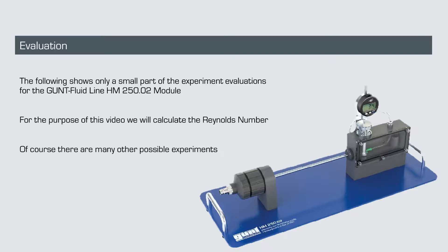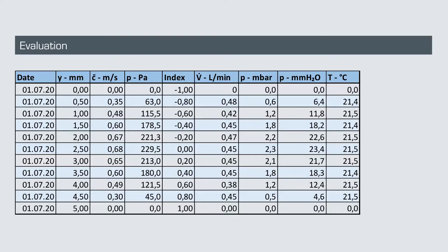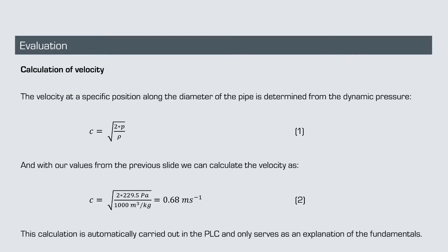For the purpose of this video we will calculate the Reynolds number for the first part of our experiment. After importing the experiment data — saved directly from the HM250 base unit onto a memory stick — into your preferred spreadsheet program, it may look like this. For this demonstration let's focus on one particular measurement: the center position of our pipe. We calculate the velocity at that position from the measured dynamic pressure, which is automatically done by the PLC of the unit, but it explains the fundamentals behind the experiment.